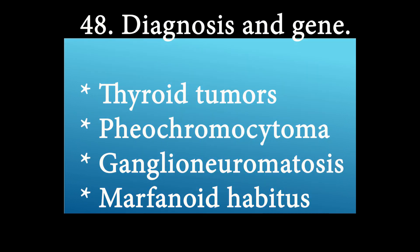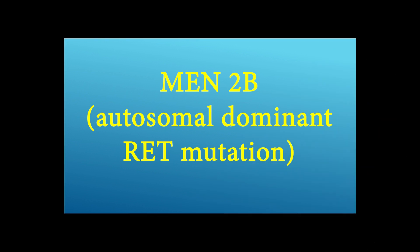What are the diagnosis and gene of these presentations? Thyroid tumors, pheochromocytoma, ganglioneuromatosis, and marfanoid habitus. The answer is MEN2B — autosomal dominant RET gene mutation.